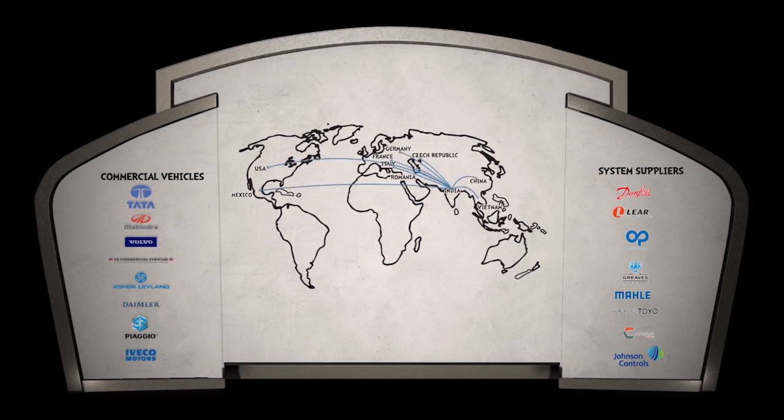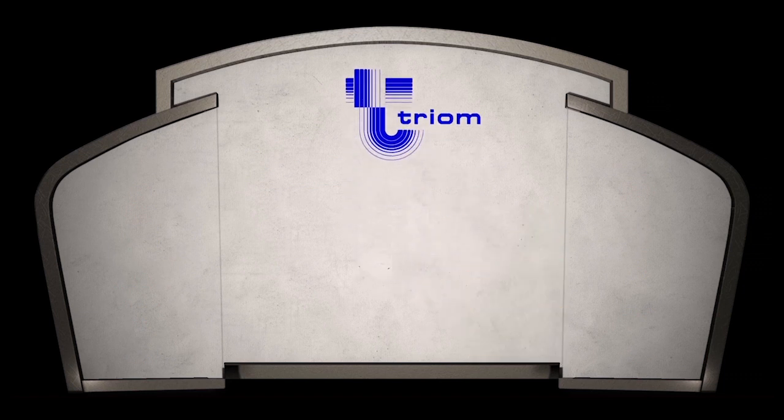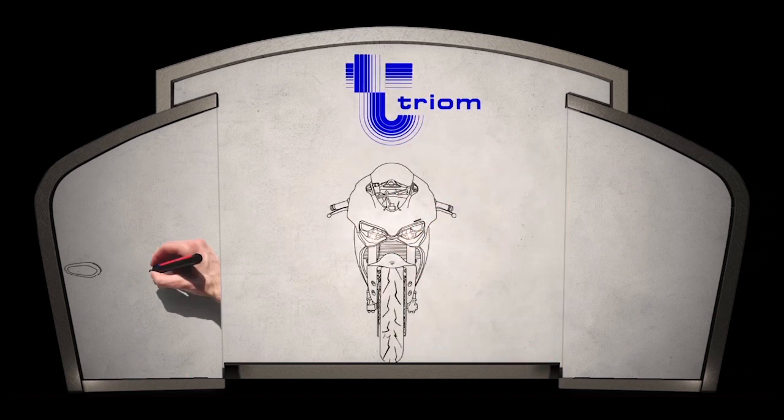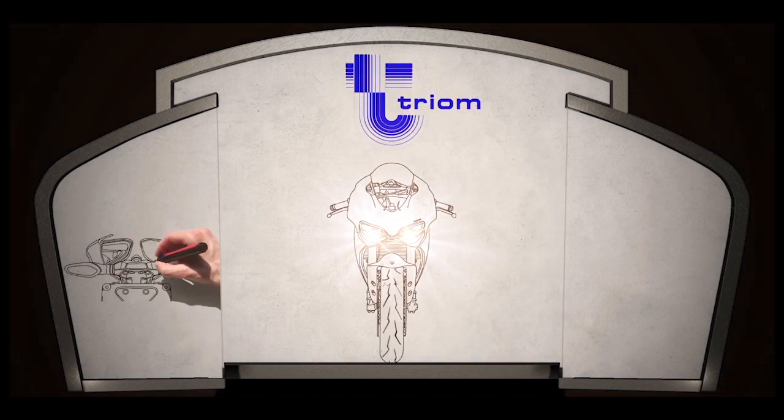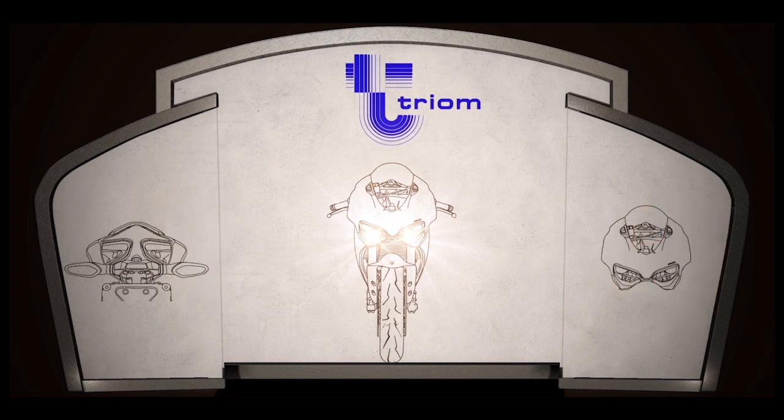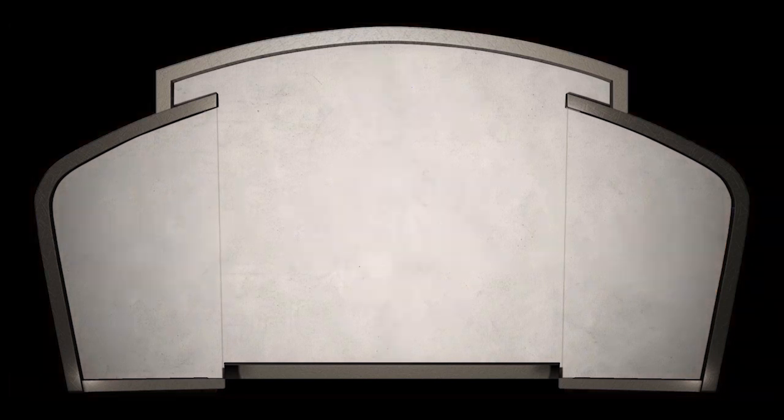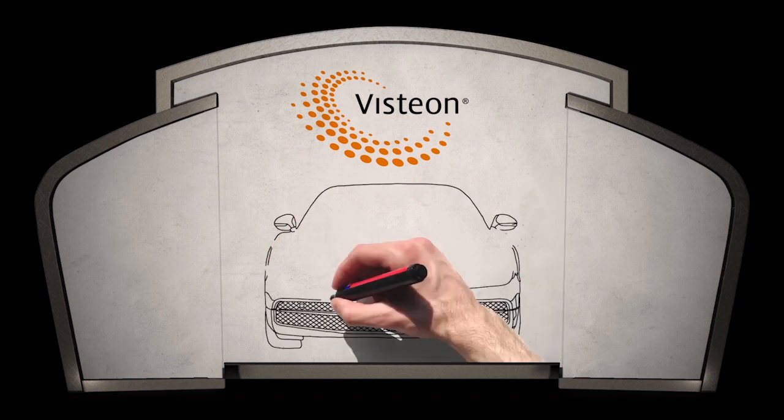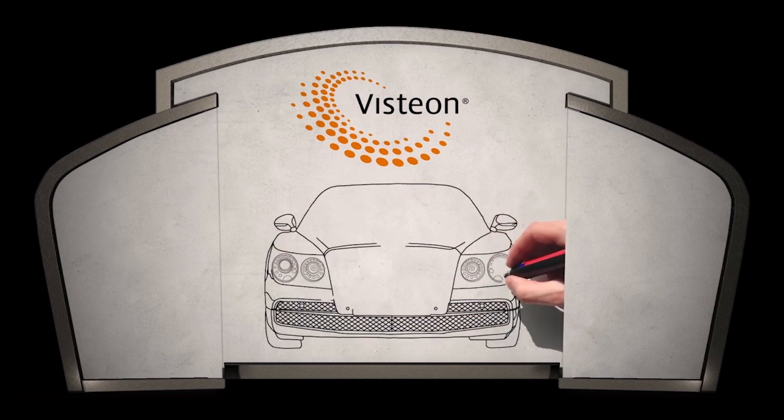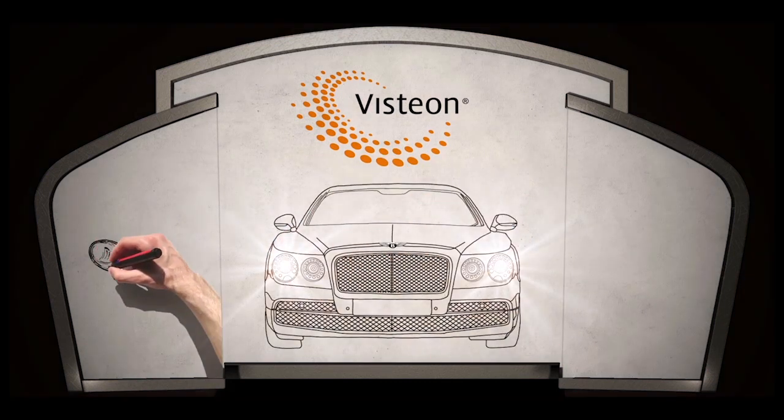This diversification began in 2011 with the acquisition of Trium, the leading European two-wheeler lighting manufacturer, and was followed spectacularly in 2012 with the acquisition of Visteon's global lighting business, a global leader in passenger car exterior lighting.